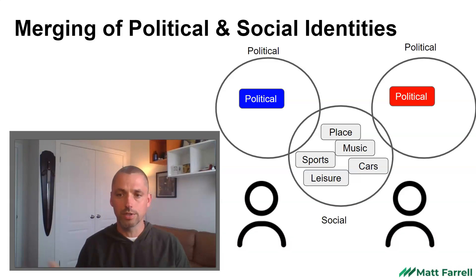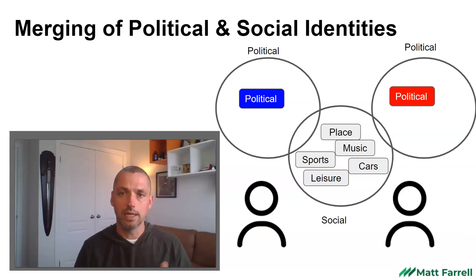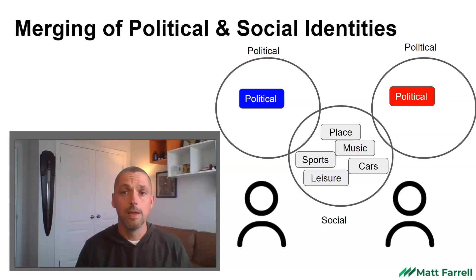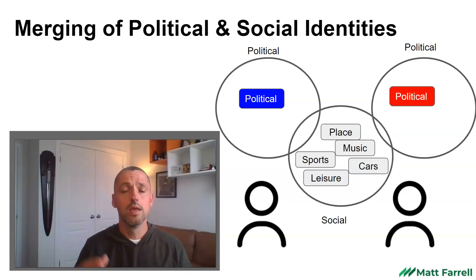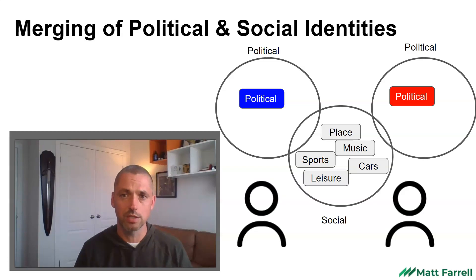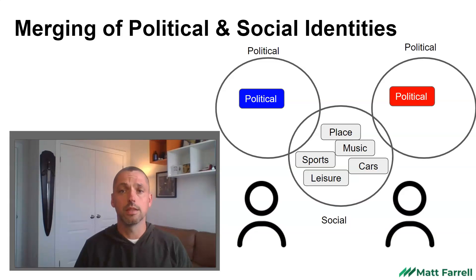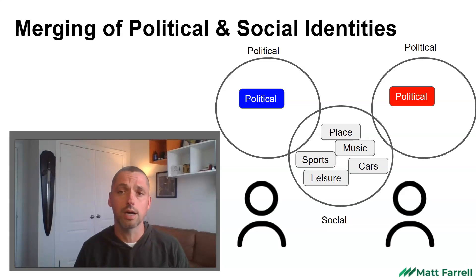Consider two hypothetical voters: one might lean toward the blue party, another might identify with the red party — different issue preferences and voting intentions. However, socially they might have things in common: maybe they spend their leisure time the same way, live in the same geographic community, listen to the same music, or drive the same type of car. So despite having different political identities, they might share several social identities and still have a lot in common.